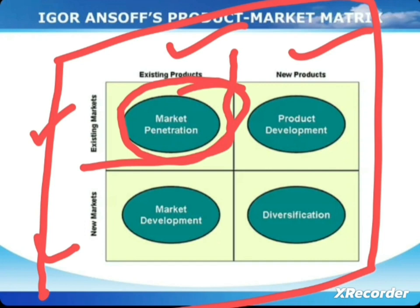In market penetration, the company works on the same level — they have the same product and are in the same market. They try to maximize profit from that combination. They do not think about a new product or a new market. Whatever product and market they have, they work on those. It is the market penetration quadrant.